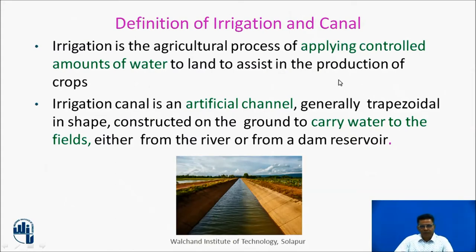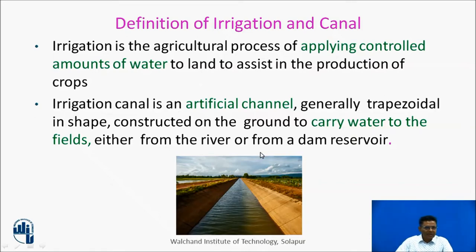Irrigation is the agricultural process of applying controlled amounts of water to land to assist in the production of crops. An irrigation canal is an artificial channel, generally trapezoidal in shape, constructed on the ground to carry water to the fields either from a river or from a dam reservoir.